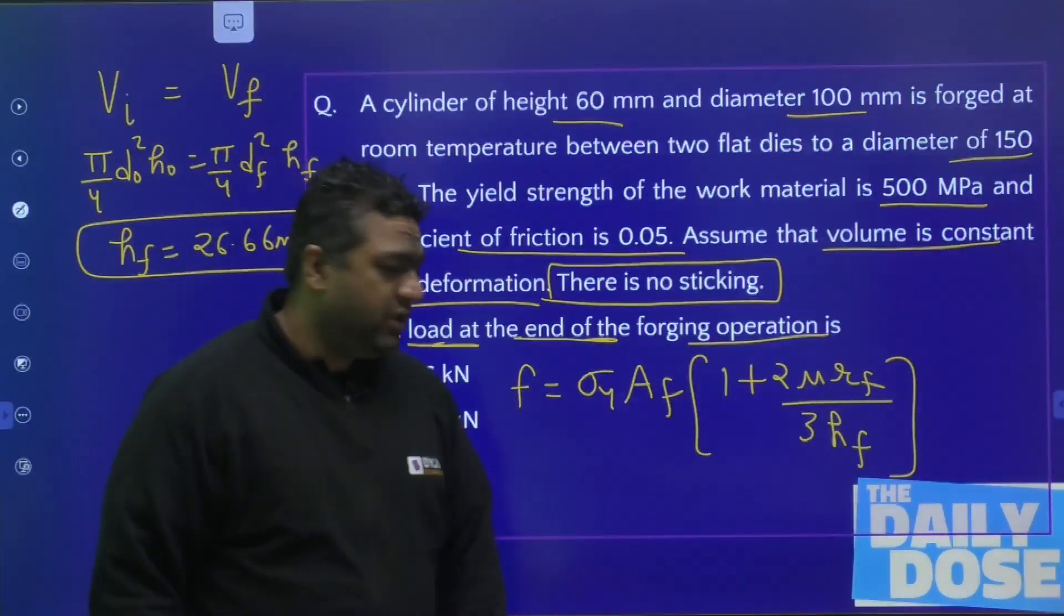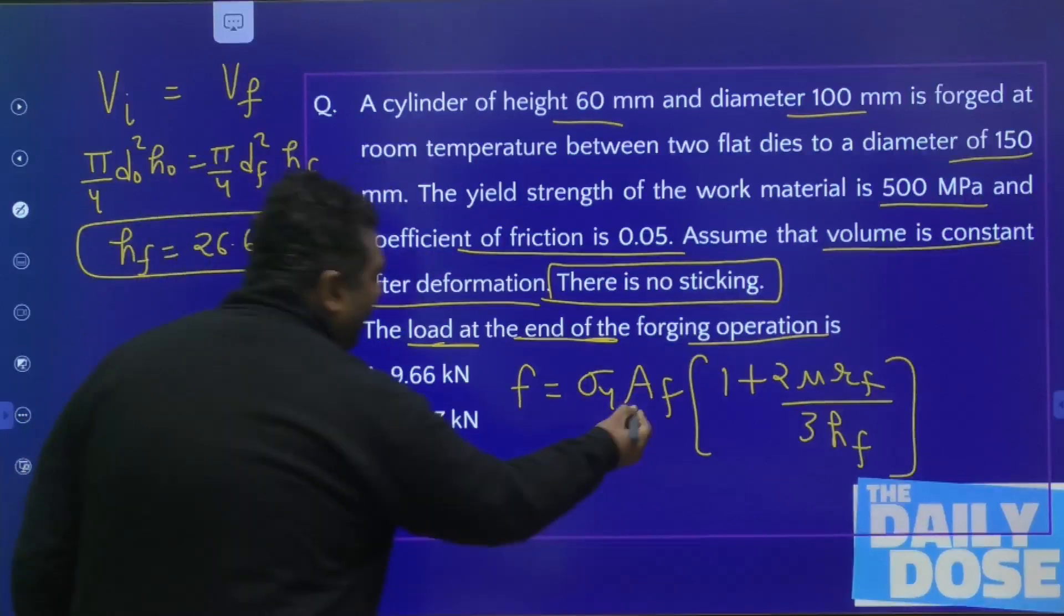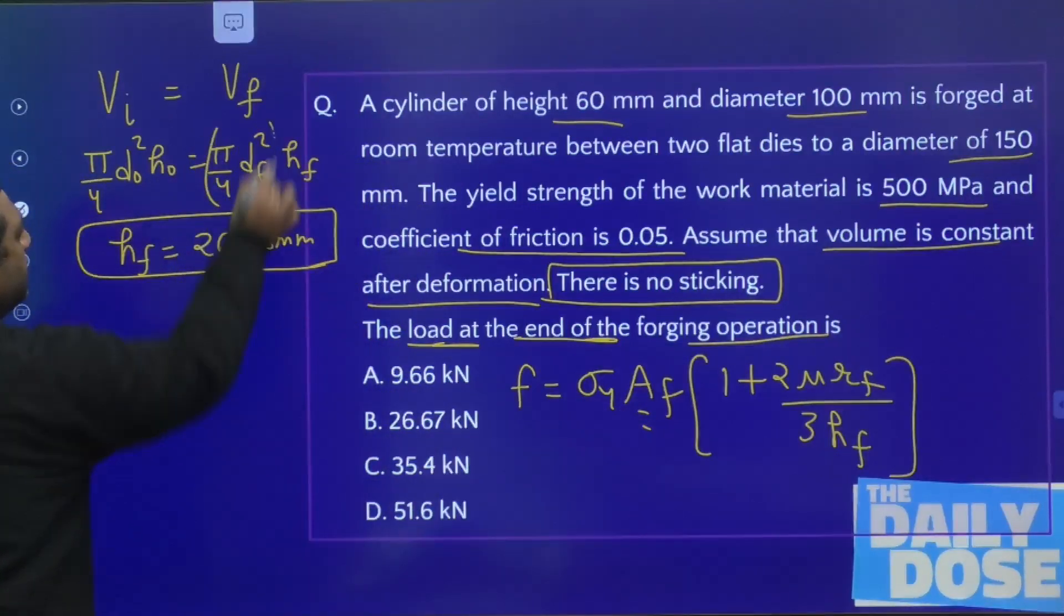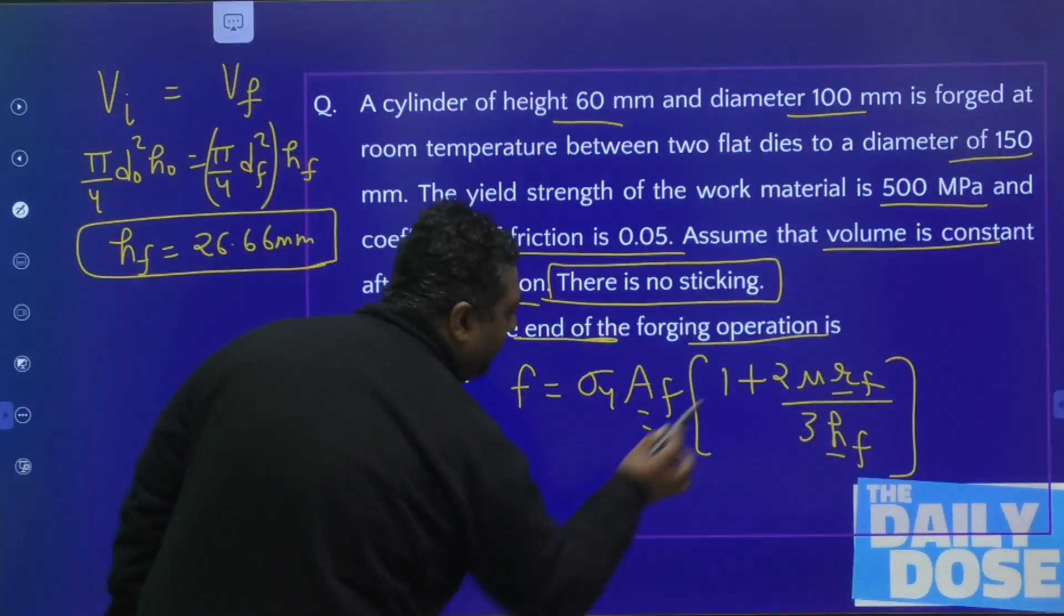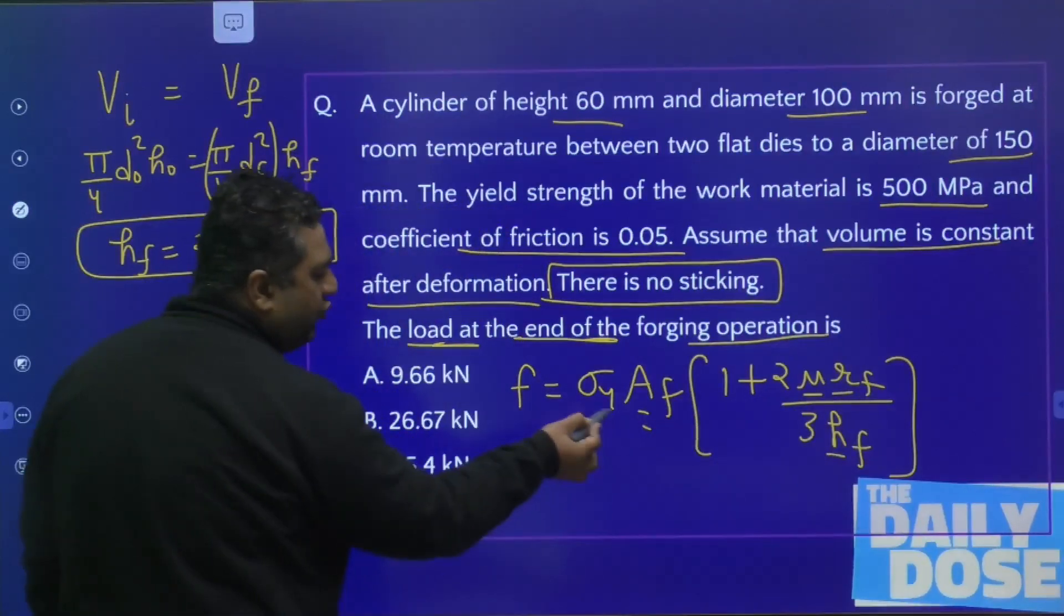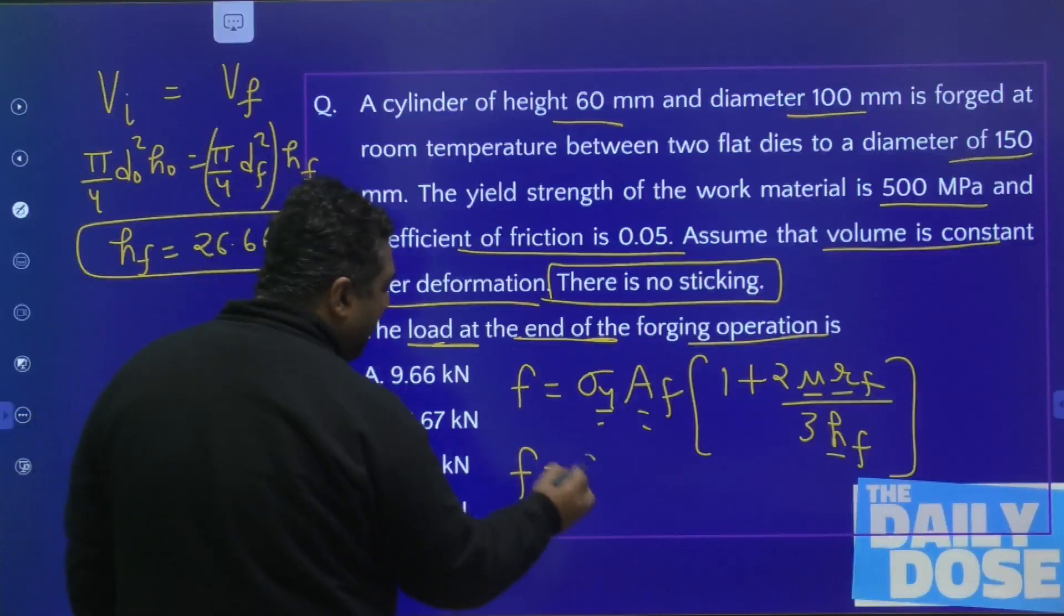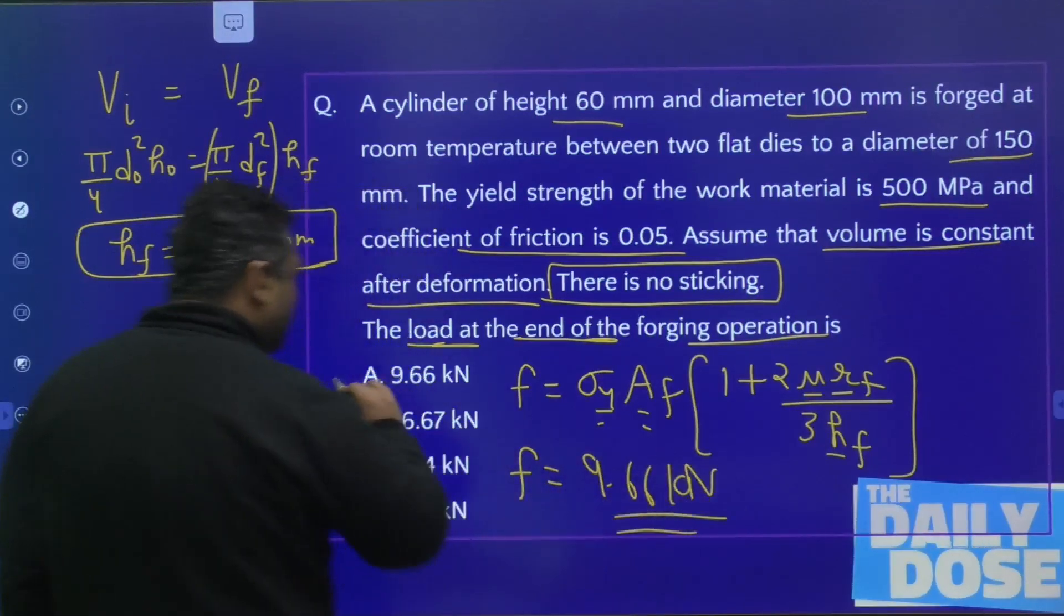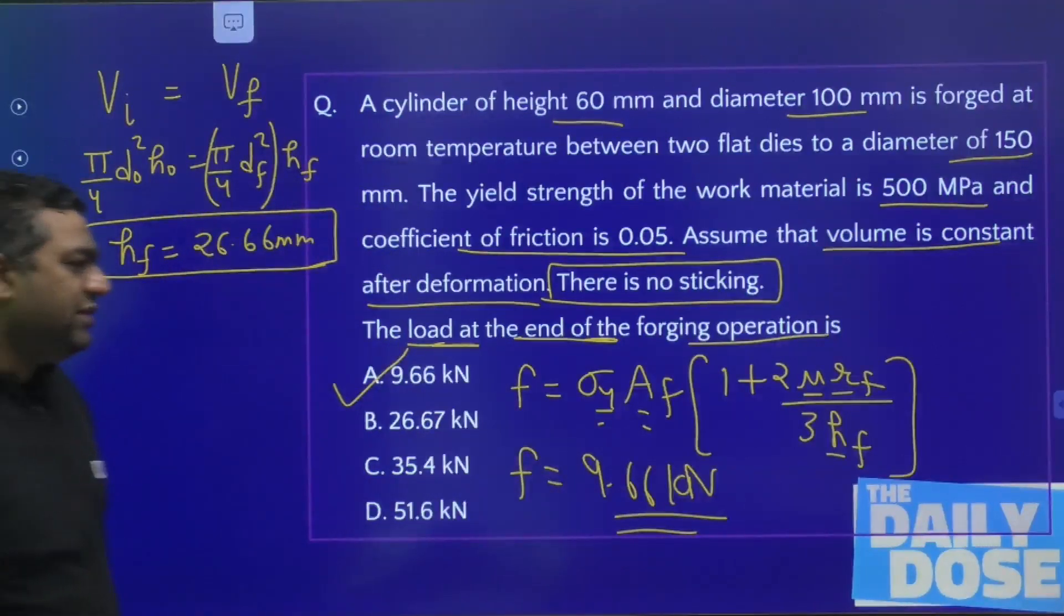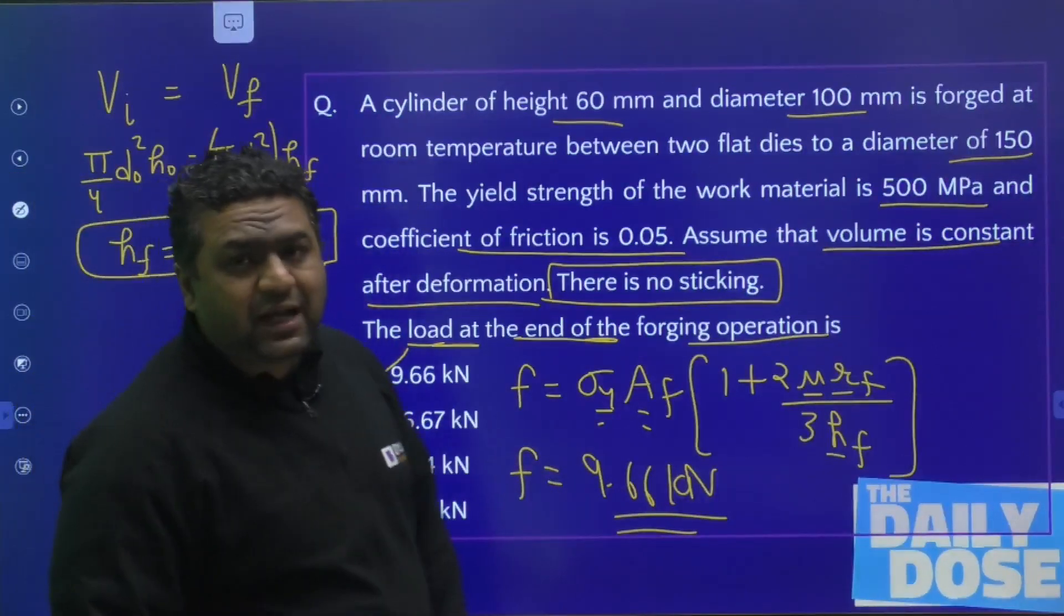You know that Af involves rf, hf, and μ. When you put all the values and σy is given, you will get the force to be 9.66 kilonewtons. When you see this type of question, we can use this formula.